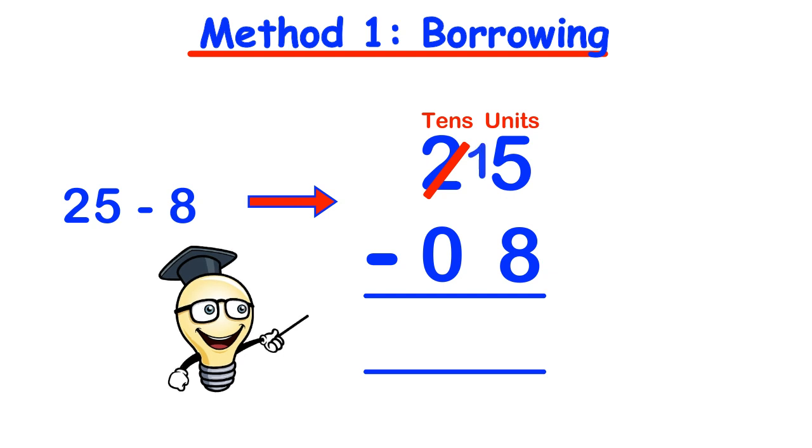we have to borrow from the tens column. So we borrow 1 from the tens column and we add that borrowed 10 to the existing unit, which is 5, to make 15. And now since 15 is greater than 8, we can do the subtraction.